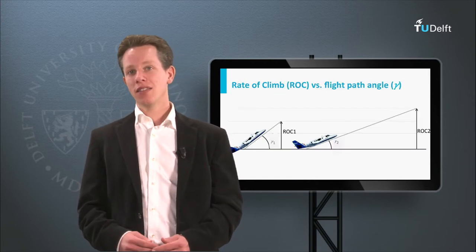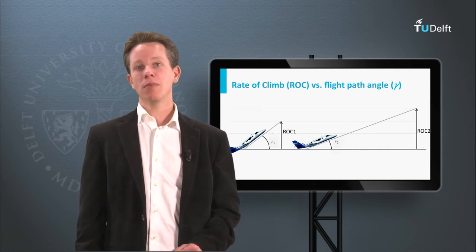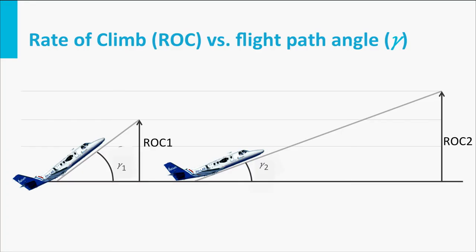Let's have a look at the two parameters we are typically interested in: the rate of climb and the climb angle. The airspeed vector has an angle gamma with respect to the horizon — this angle indicates how steep the aircraft climbs. The vertical component of the airspeed vector, V times the sine of gamma, is the rate of climb. In other words, the speed in meters per second at which the aircraft gains altitude.